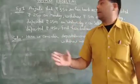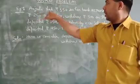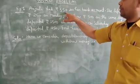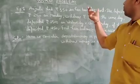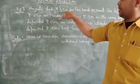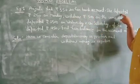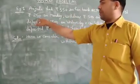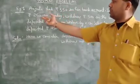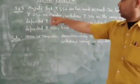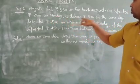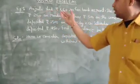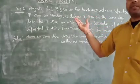This is an example of word form. Anjali paid Rs.550 into her bank account. Opening bank account balance is Rs.550. Anjali deposited Rs.550 in her bank account. Deposited means Rs.550 was placed into her bank account.